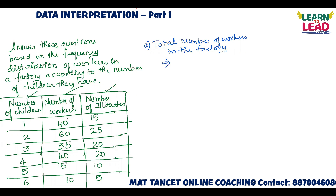If I add all the values in the number of workers column: there are two 40s, which makes 80. 80 plus 60 is 140. 140 plus 10 is 150, then 185, 190, 200. So there are 200 workers in the factory.